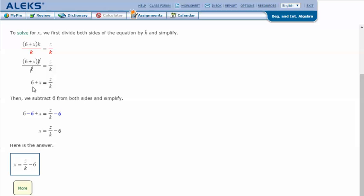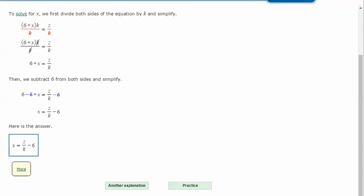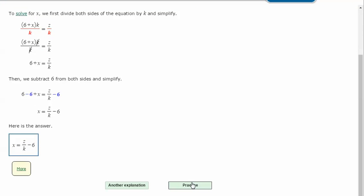Then we can subtract 6 from both sides and simplify, which gets rid of the 6 over here and moves it over here. And then we just have x equals z divided by k minus 6, which solves our equation for x. Let's try another one.